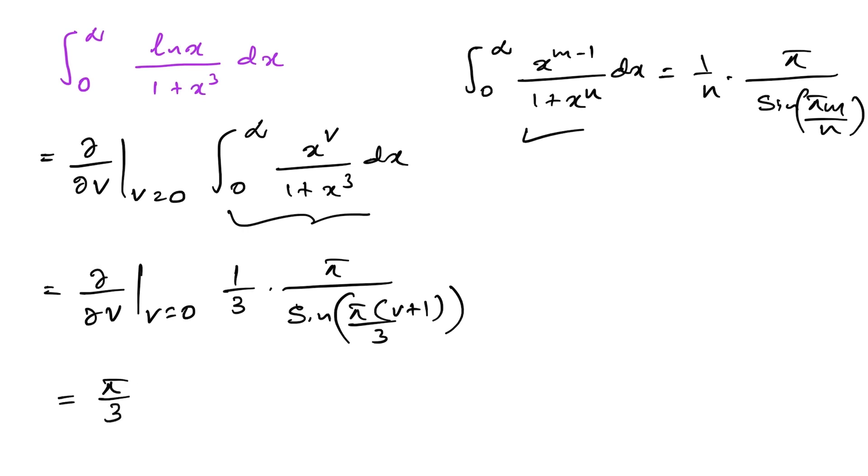Minus pi over 3 cosine of pi over 3 times cotangent of pi over 3. Here minus pi square over 9 times cosecant of pi over 3.